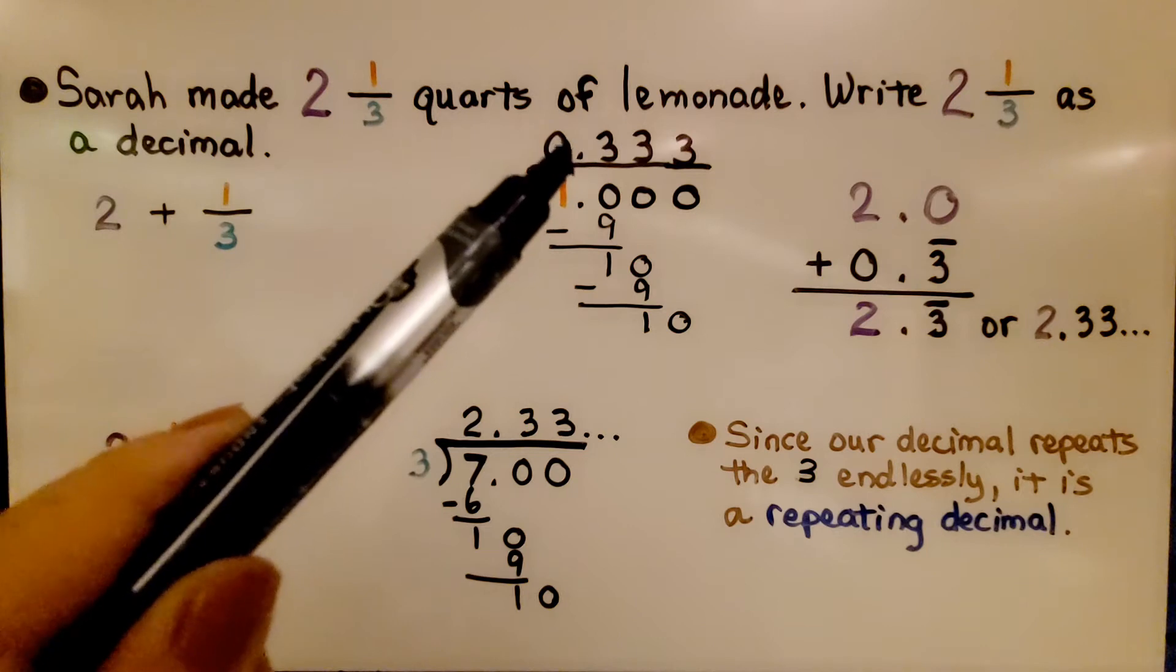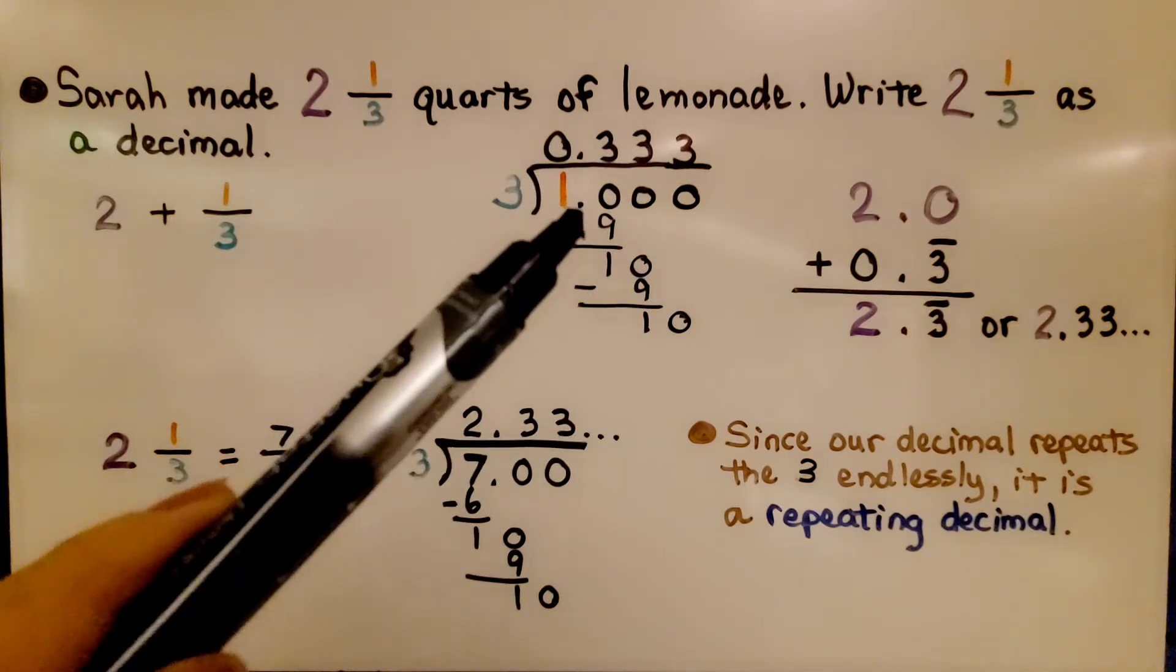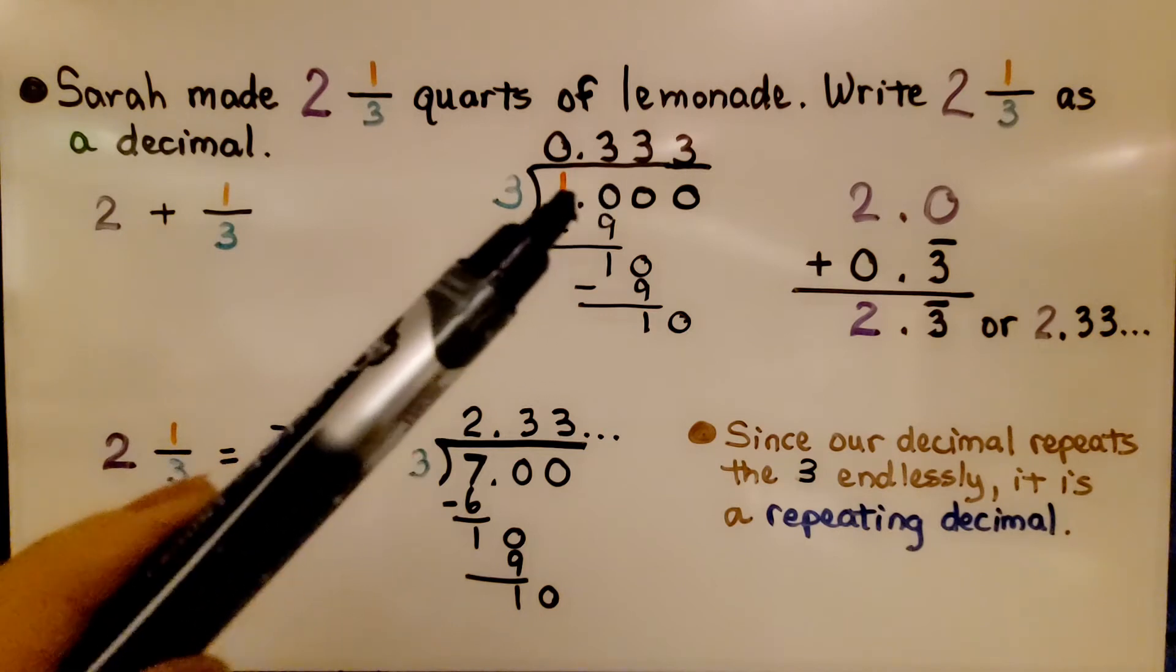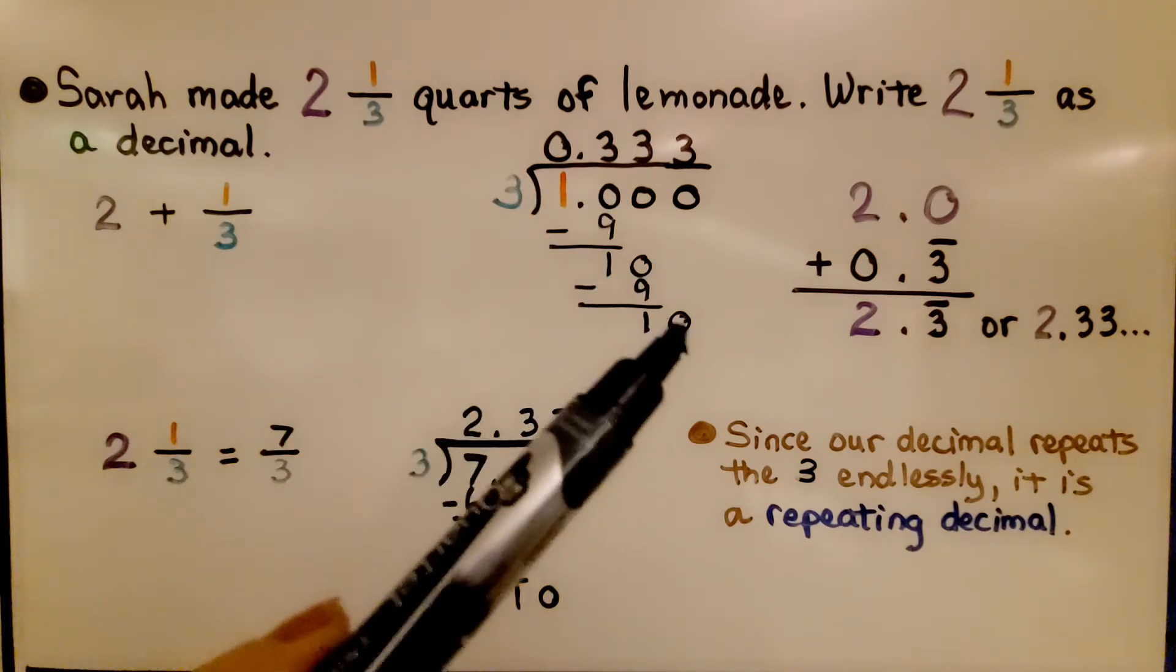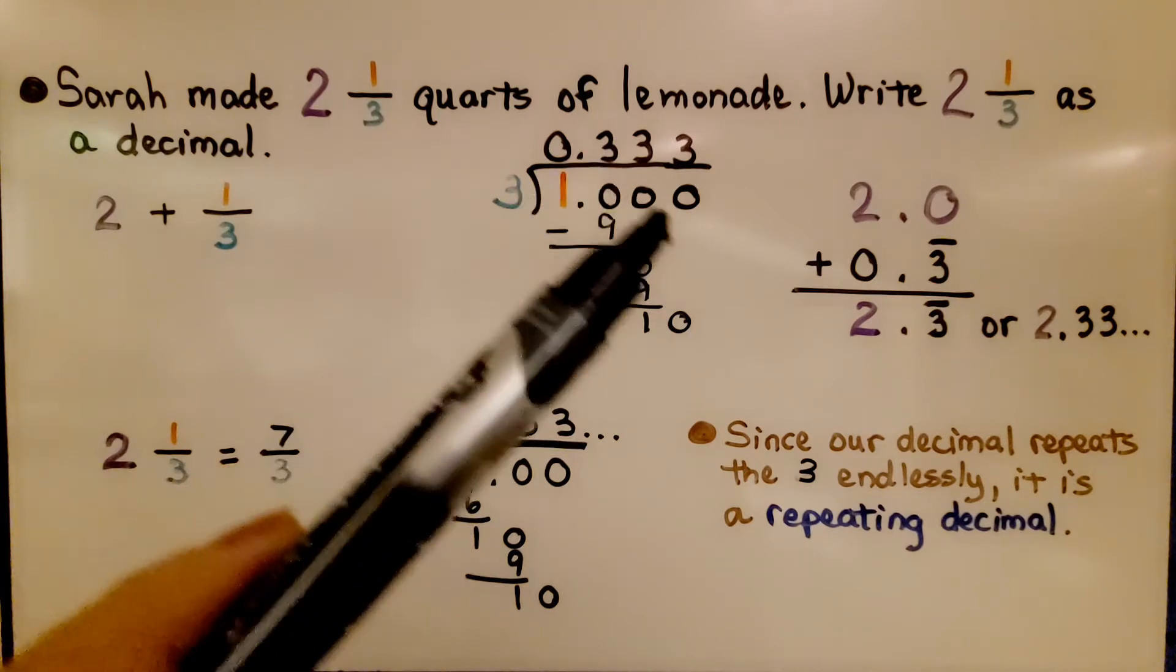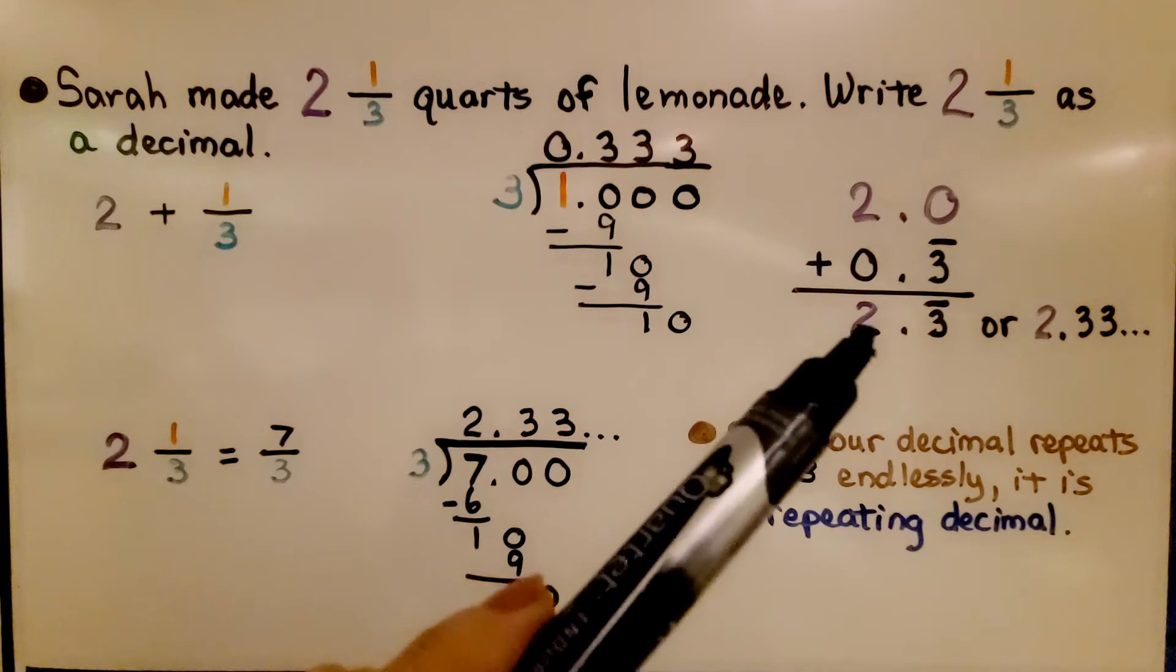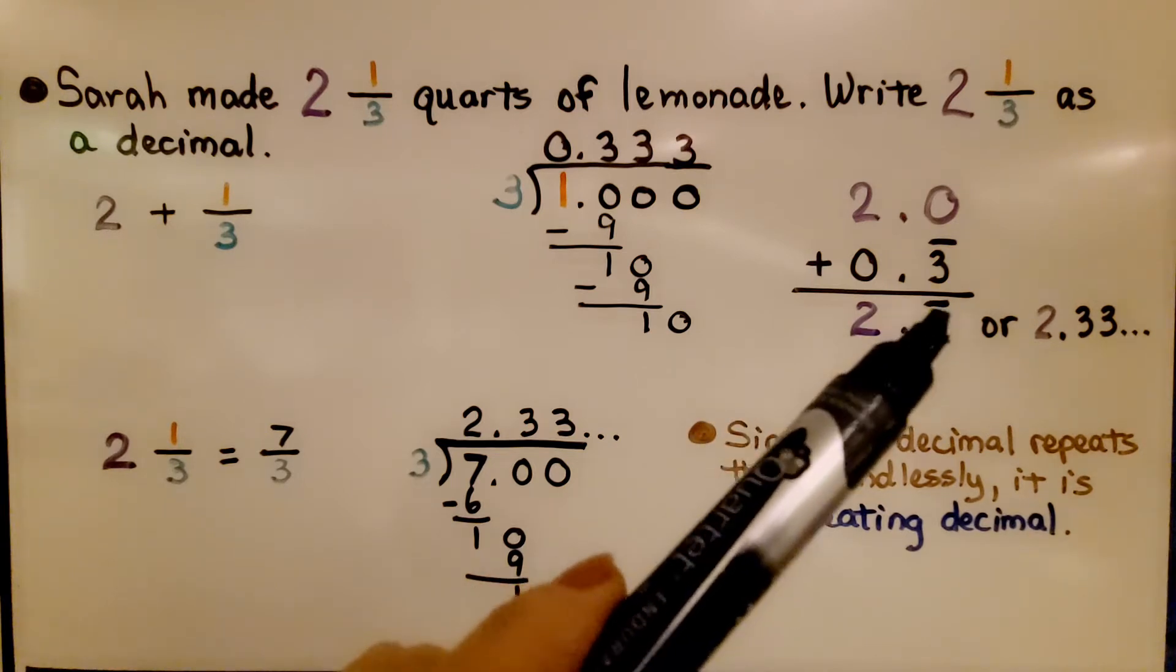That gives us 0.333 and we're going to keep continuing because we have a 1-0, then a 1-0, then a 1-0. It's going to keep repeating. So we can write it as 0.3 with a bar over the top and add them to get 2 and 3/10 with the bar over the 3.